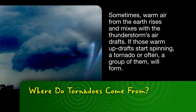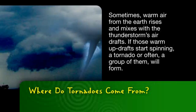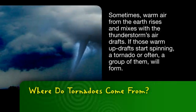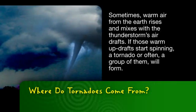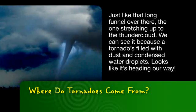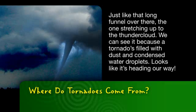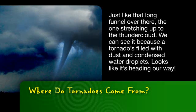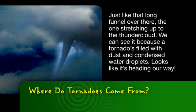If those warm-up drafts start spinning, a tornado or often a group of them will form. Just like that long funnel over there, the one stretching up to the thundercloud. We can see it because a tornado is filled with dust and condensed water droplets.